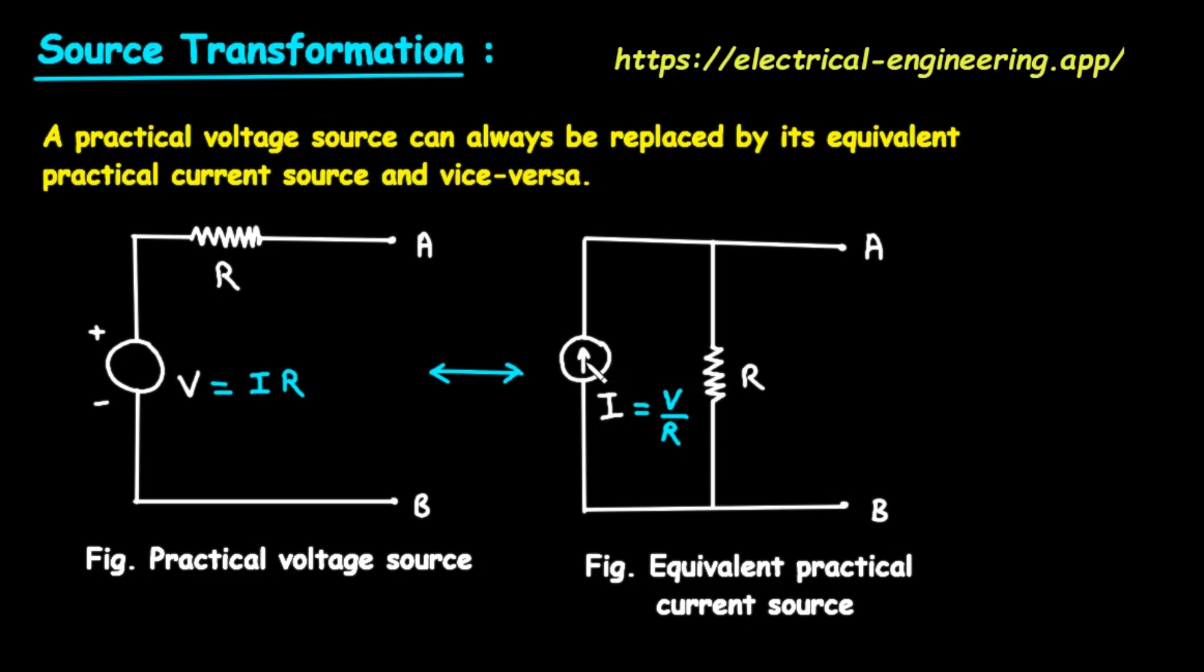The first component is a circle with an arrow inside it. This is the symbol for an ideal current source. It's the part that produces a constant flow of current. We'll call this current I. The arrow shows the direction the current flows, which in this diagram is upwards. The second component is the same zigzag line, or resistor, also labeled R. It is connected in parallel with the current source. So, a practical current source is an ideal current source I connected in parallel with a resistor R.